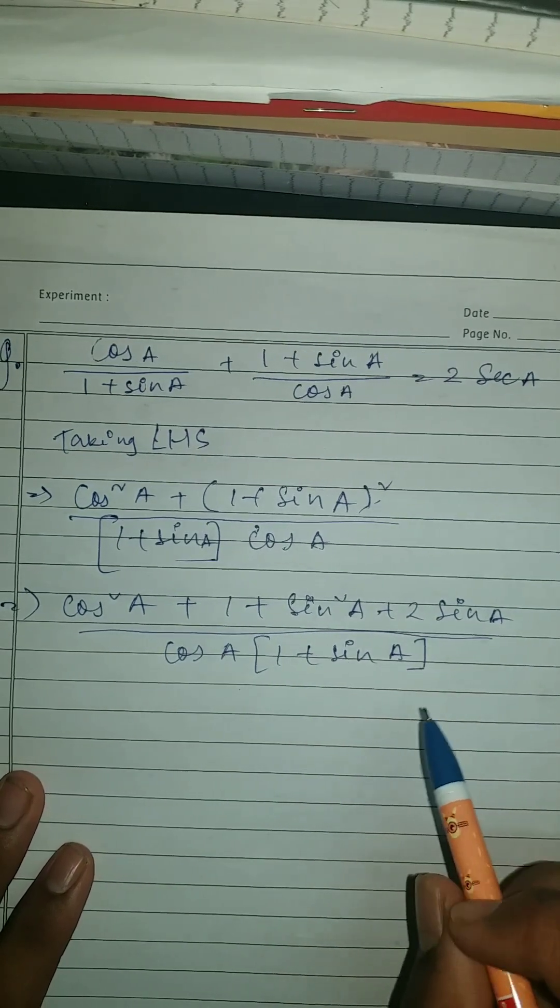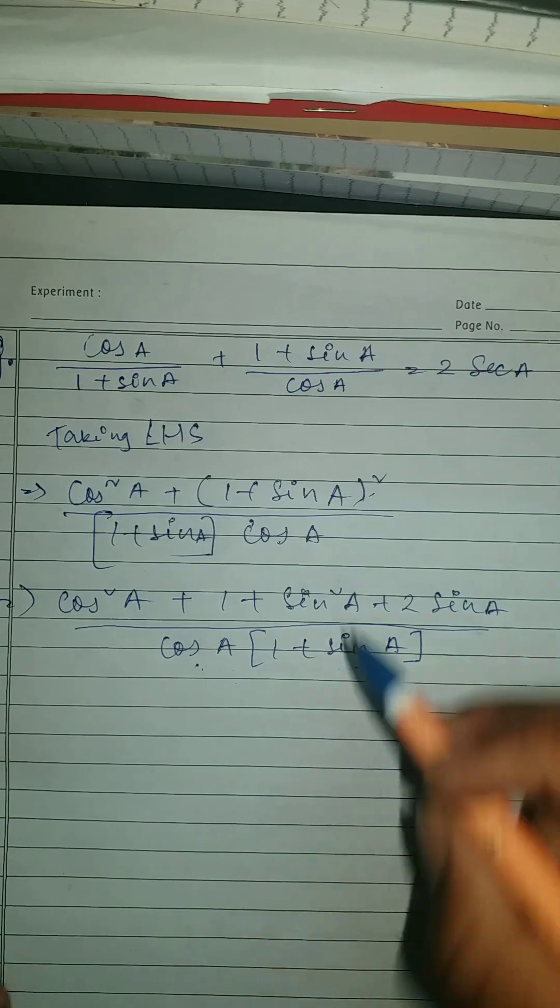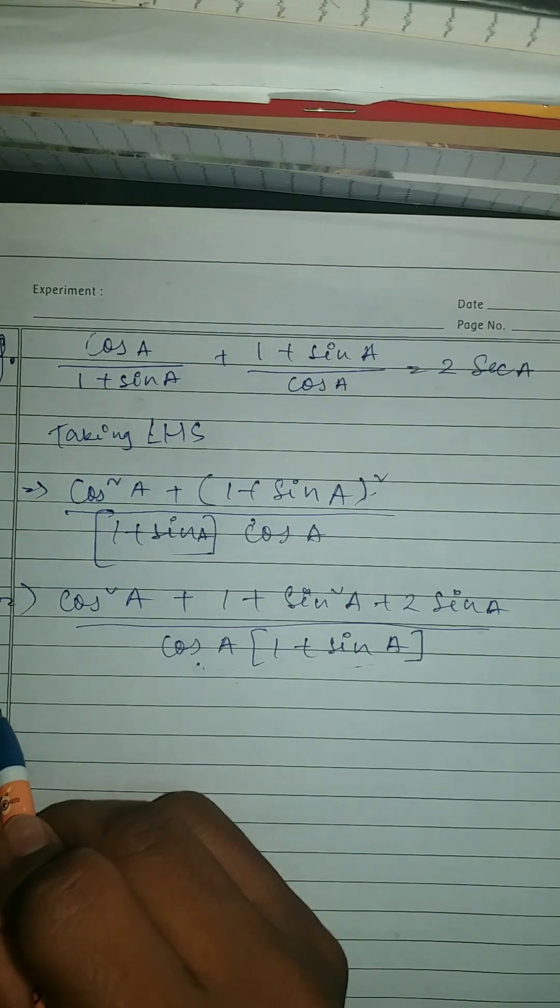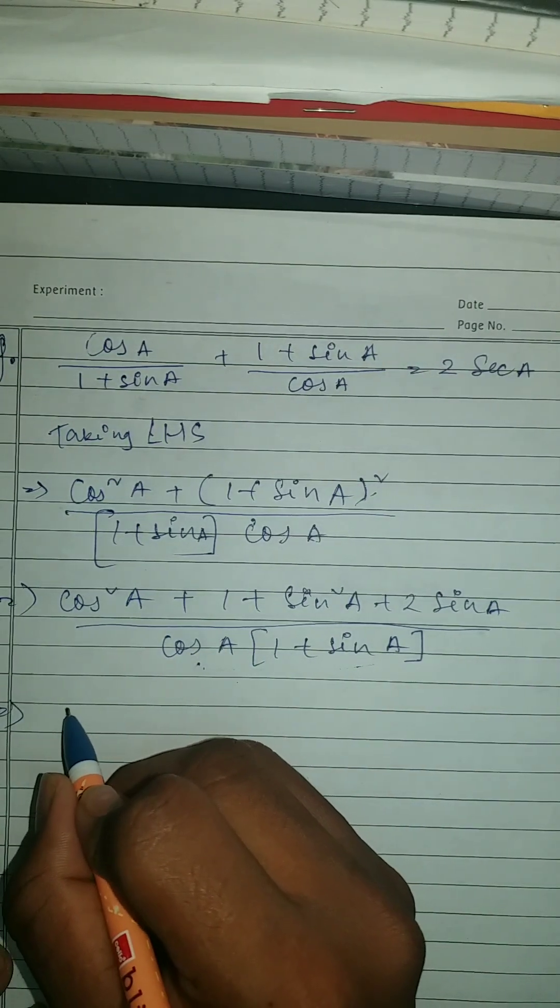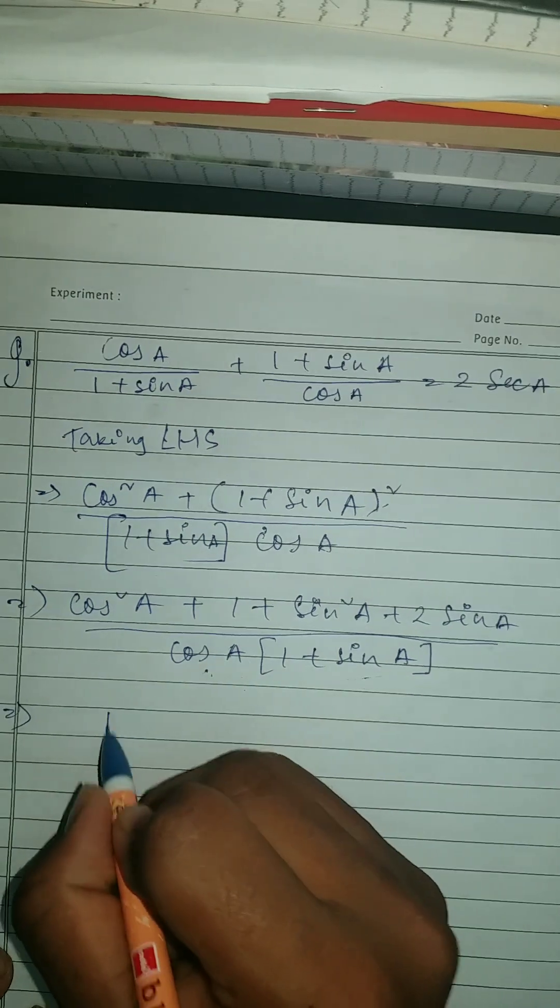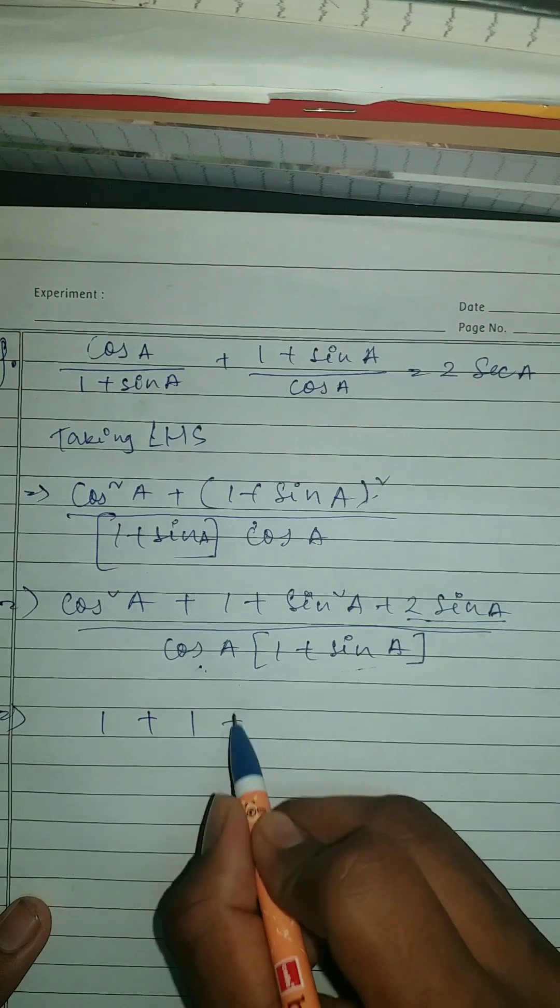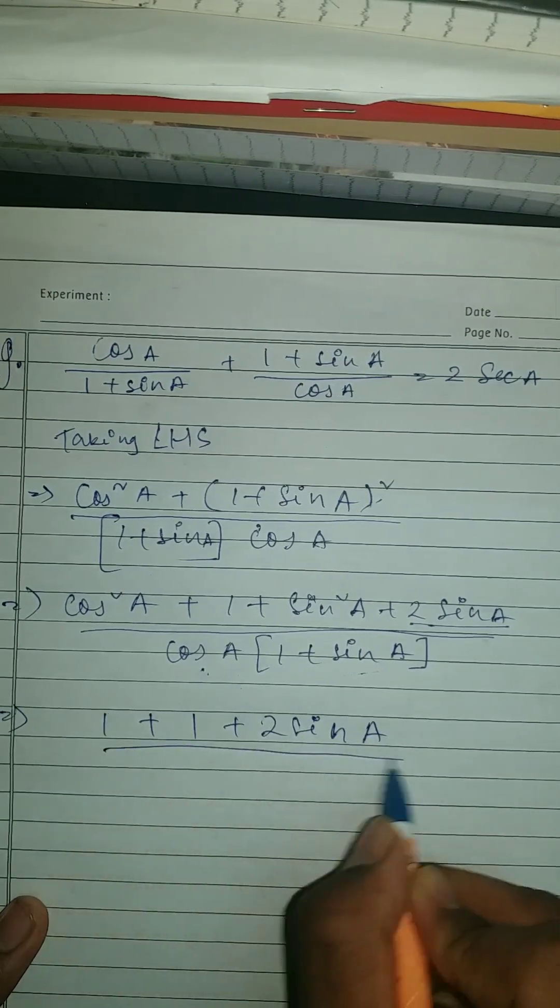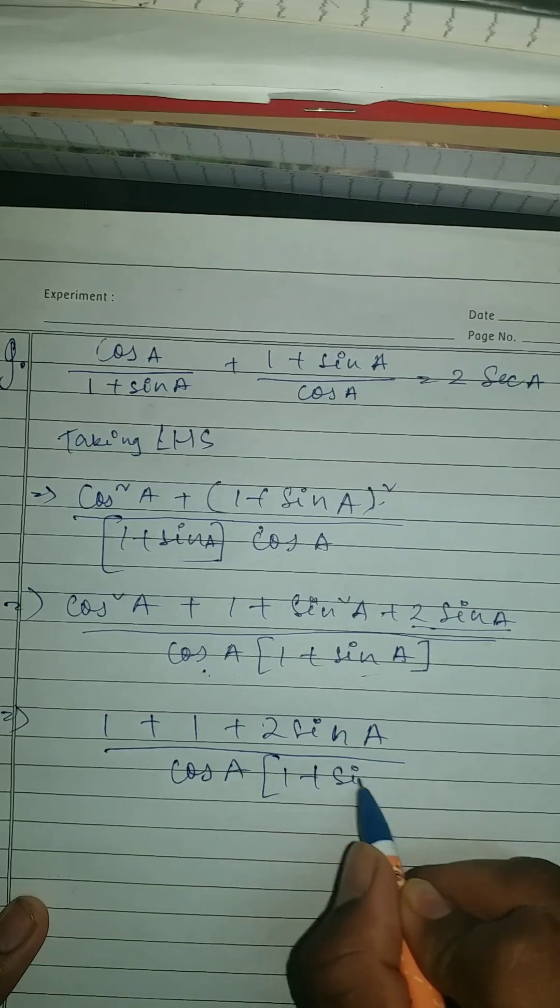So now you don't have to do anything in denominator. You're gonna solve in numerator. So guys now, let's see how to do this. So here cos square a plus sine squared a which is your 1, as you know that, so it should be your 1 plus 1. So plus 2 sine a upon cos a in bracket 1 plus sine a.